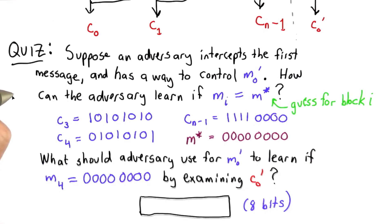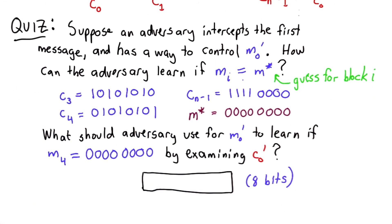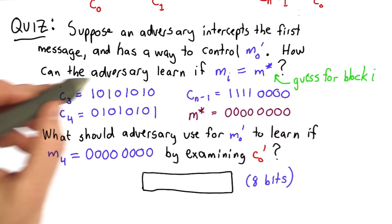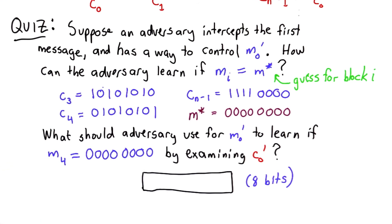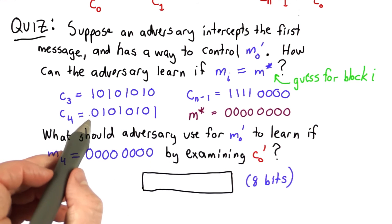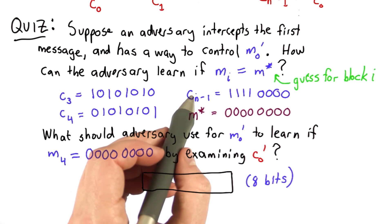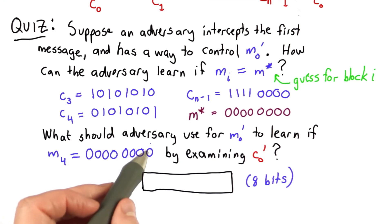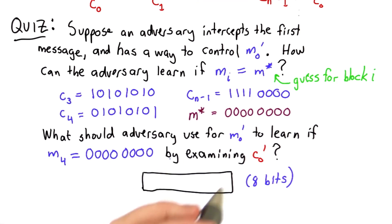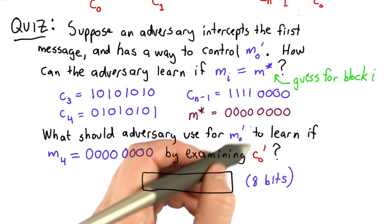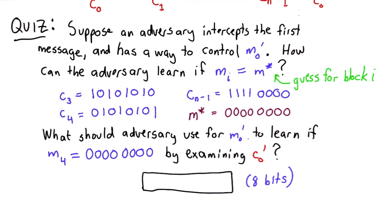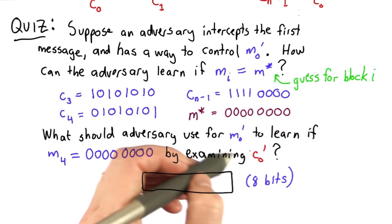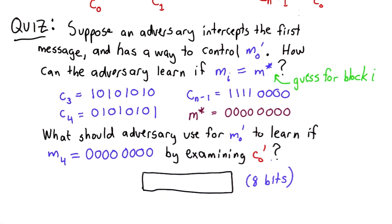To make this more concrete, suppose the blocks are all 8 bits. The adversary has intercepted all the ciphertext blocks; I'll give you three of them: C3 was 10101010, C4 was 010, and C(n-1) — the last ciphertext block — was four 1s followed by four 0s. What the adversary wants to learn is whether M4 equals all 0s. To do this, the adversary can set the value of M-prime-0, figure out how to make the server give a particular response, and examine the first ciphertext block.